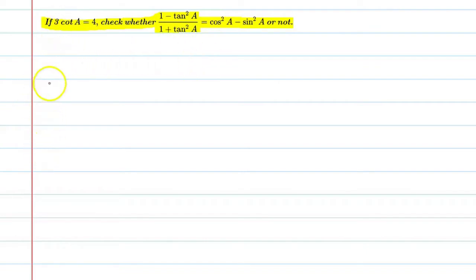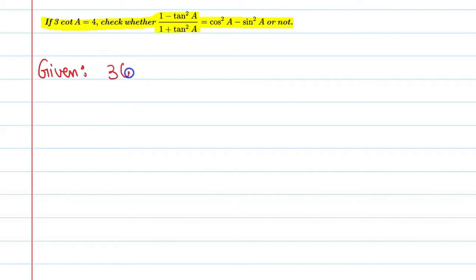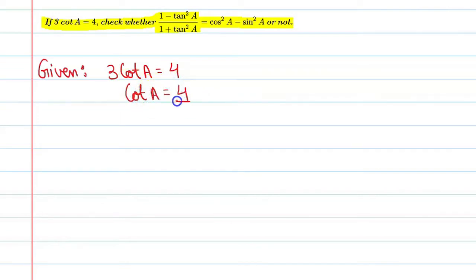The given condition is 3 cot a is equal to 4. From here we can say that cot a is equal to 4 upon 3. So let's start with our solution.